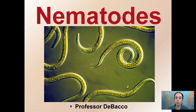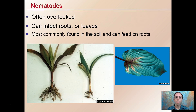Here we're looking at nematodes. Both pronunciations are fine. They are non-segmented worms, meaning that these are in fact animals. So while they are very small, these are animals that can infect plants. They're often overlooked and can infect the roots as well as the leaves of plants. They're most commonly found in the soil and can feed on the roots — that's probably where they're most notable.